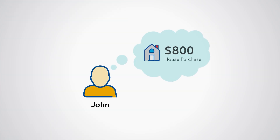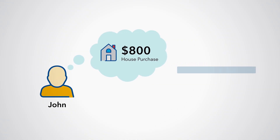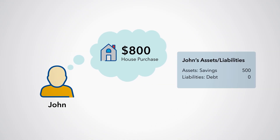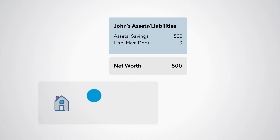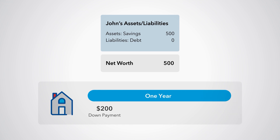Suppose John decides to buy a house for $800. He has no debts and has savings of $500 in his account at Bank B, so he begins with a net worth of $500. He purchases a new home at the start of the year by making a down payment of $200 and finances the remaining portion by taking out a mortgage from Bank B. He also makes an extra payment of $200 towards the loan principal in the same period. Finally, real estate prices increased by 25% between the start and the end of the year.